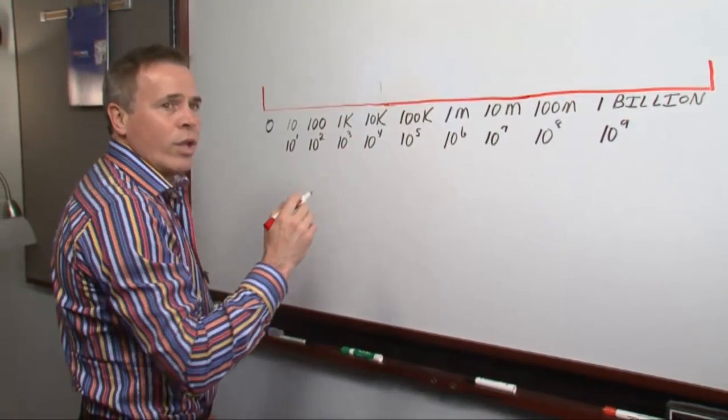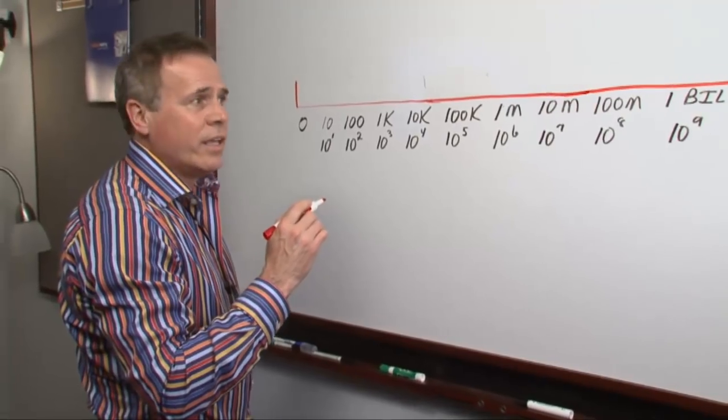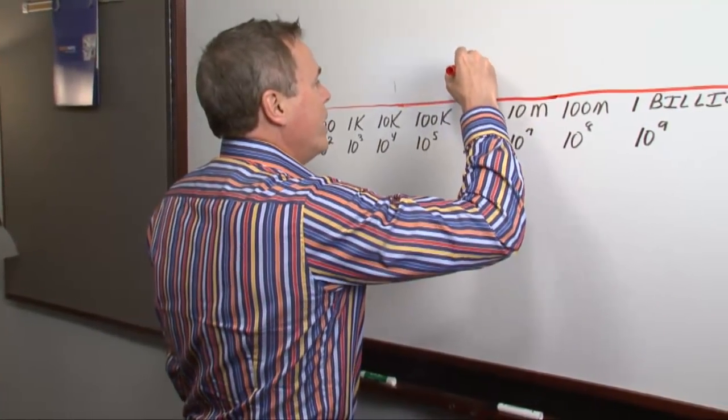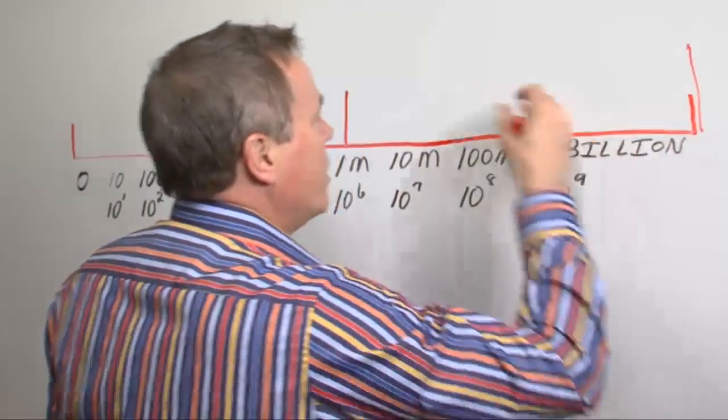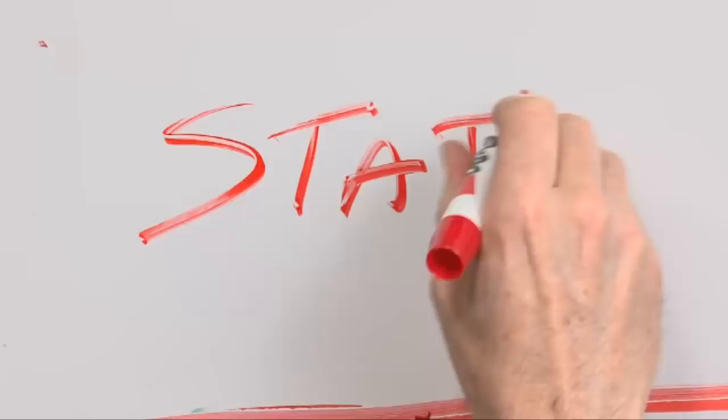Right now, if you look up a definition for static dissipative, that definition will tell you that any material from a million ohms to a billion ohms is called static dissipative.